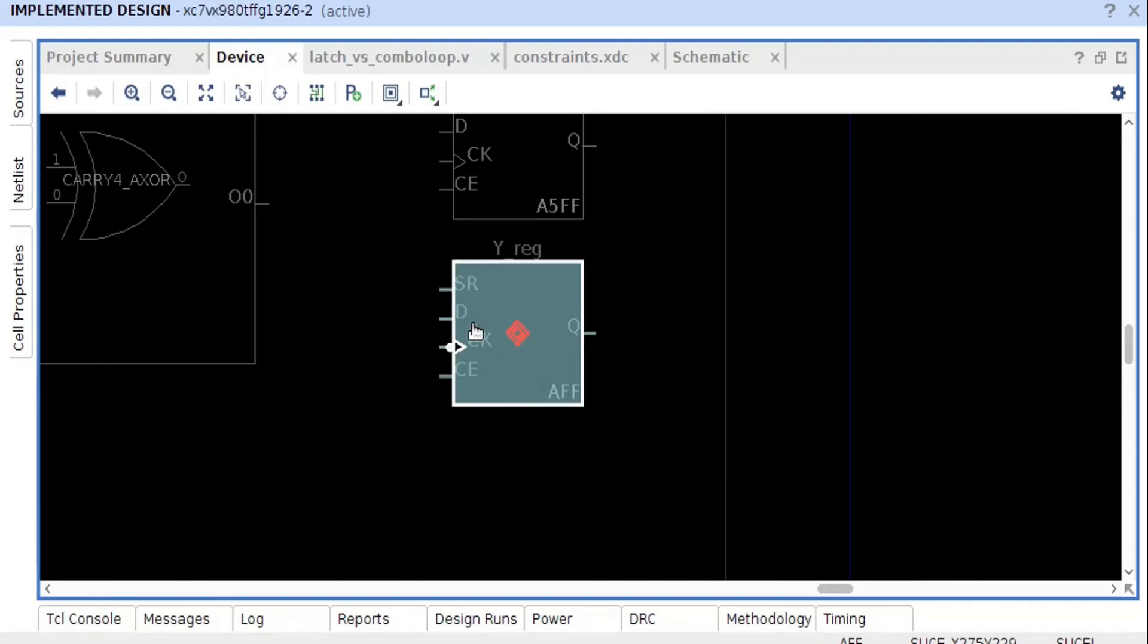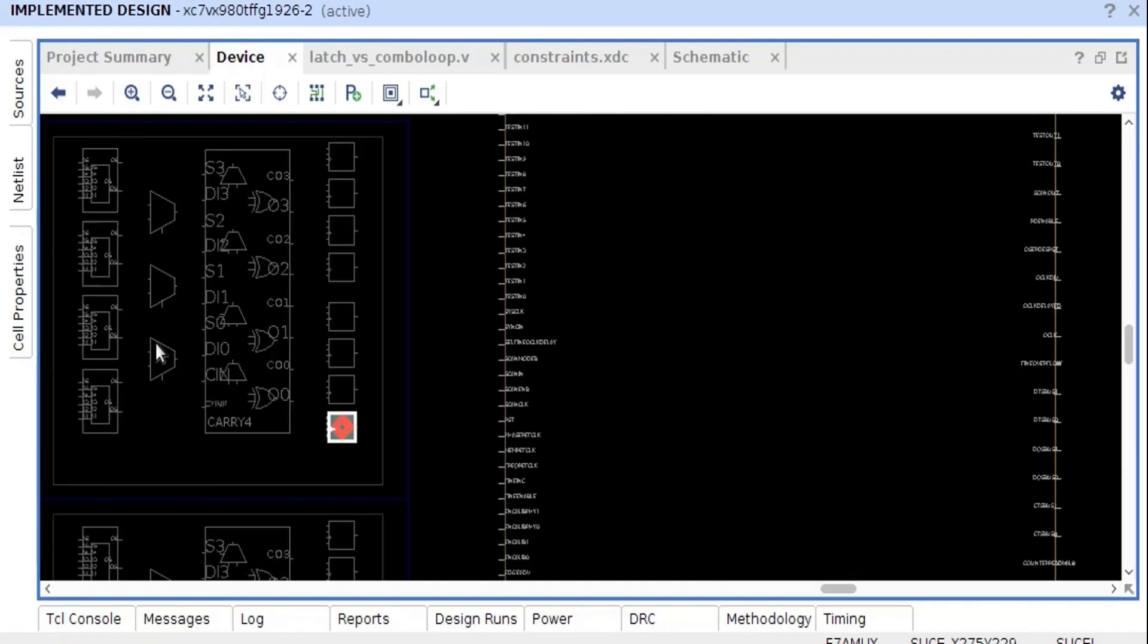It is not implementing with the help of a multiplexer. Though there are a lot of discrete 2-to-1 multiplexers available inside the FPGA, it is not using those multiplexers but is implementing with the help of a dedicated latch.